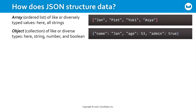An object — you might also think of it as a collection — is a set of like or diversely data-typed name-value pairs. Here, the values are a string, a number, and a boolean. Notice the key of each pair on the left-hand side of the colon is quoted. The value on the right-hand side: here we have a string value Jan, a number value 53, and the word true, which would be interpreted by the target environment as a boolean. The whole set is wrapped in braces.